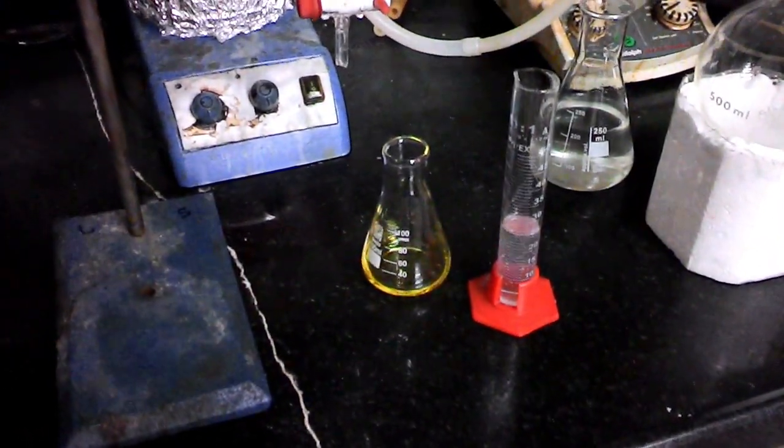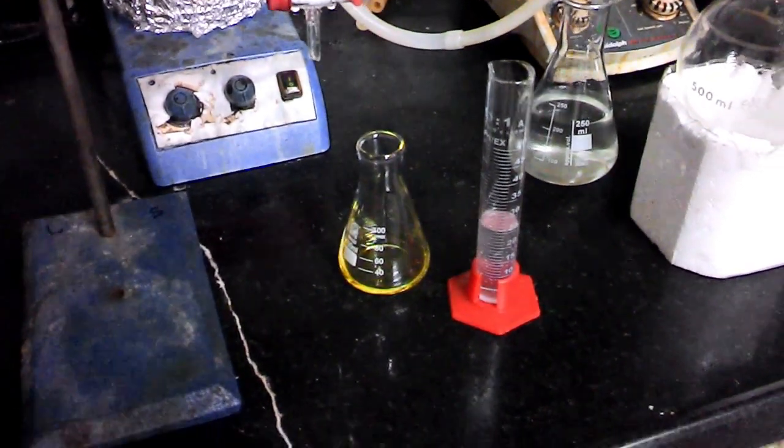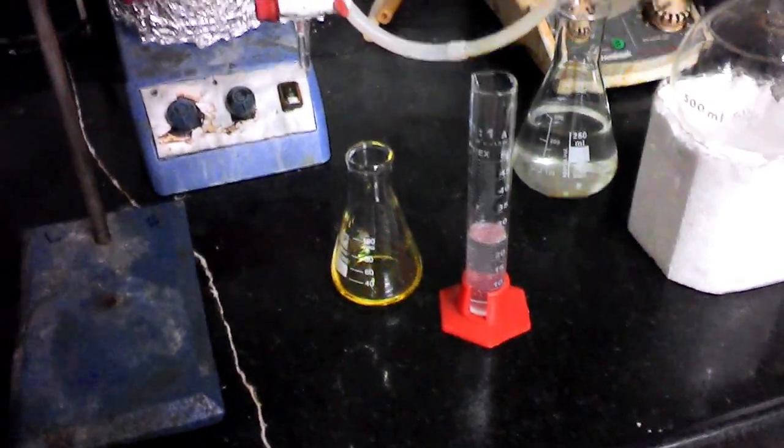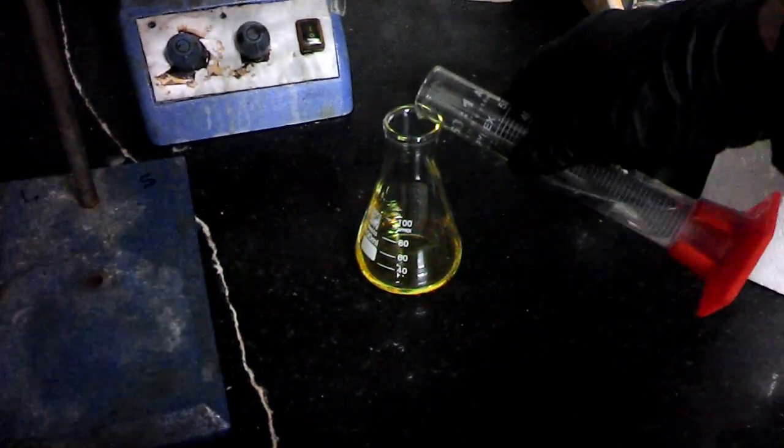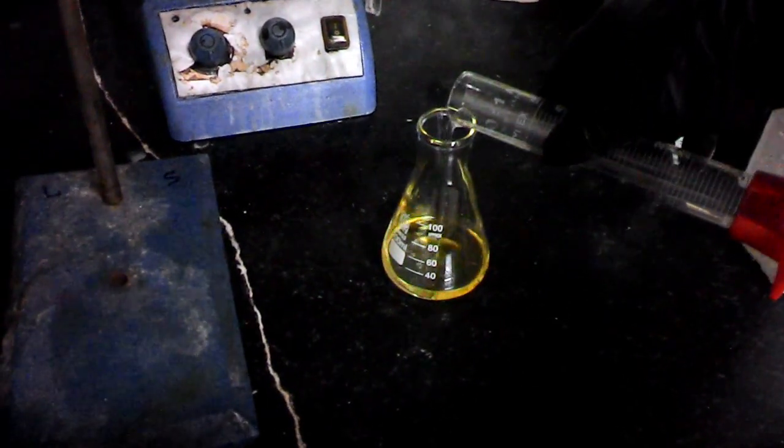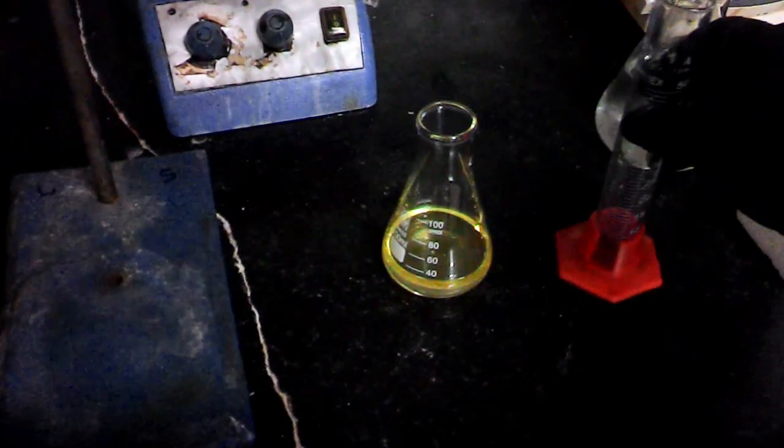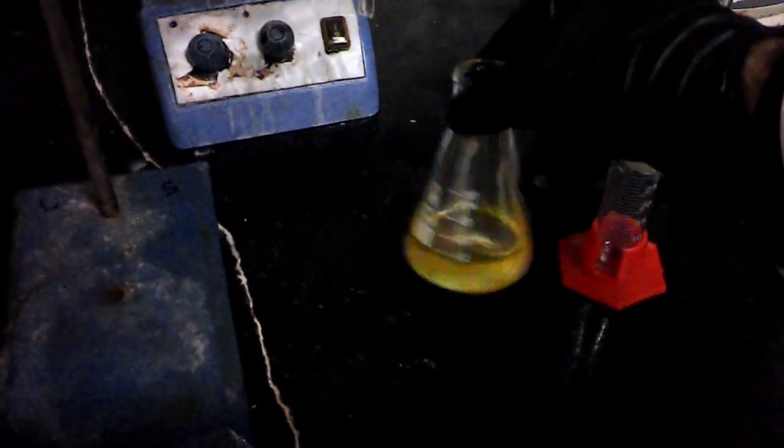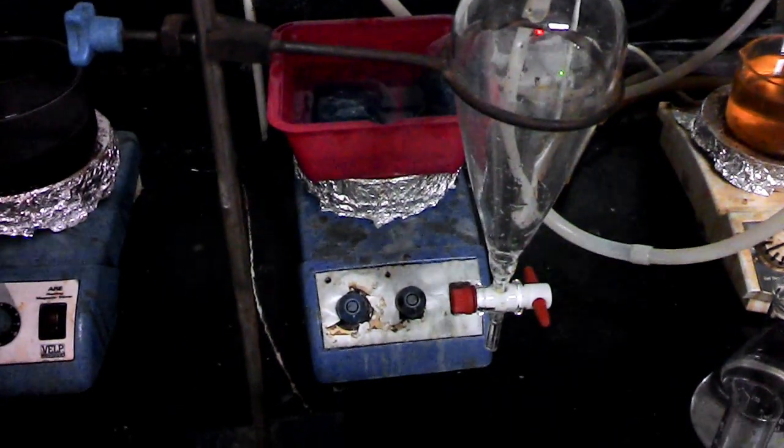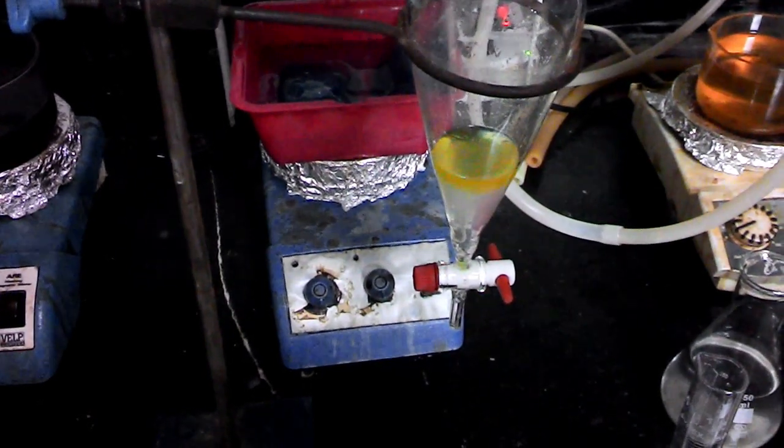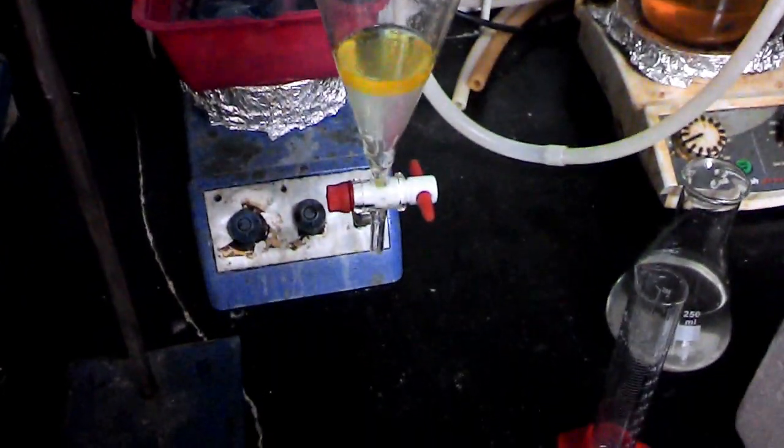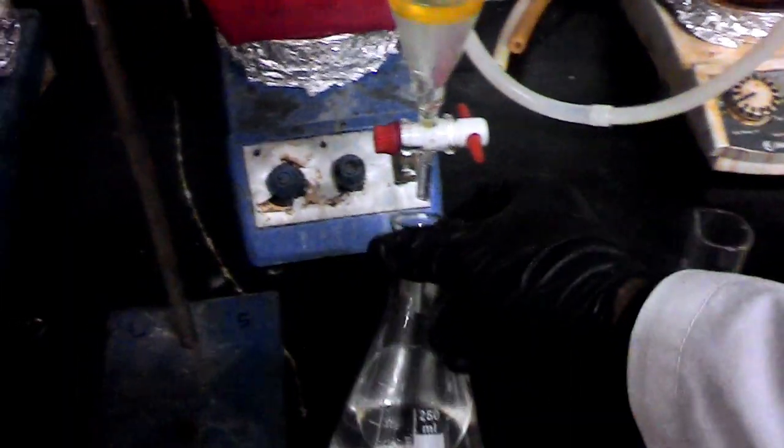Now adding 20 milliliters of sodium bicarbonate solution. We use sodium bicarbonate solution to neutralize the remaining acid. After that, it's time to decant the two phases, adding the discarding phase to the previous waste.